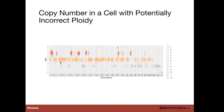We could end up with a solution where there are no odd-numbered copy number states to help us assess whether the cell is tetraploid. In that case, we could divide the entire set of copy numbers by two and get an equally reasonable genome at baseline diploid. This is the identifiability of copy number problem that doesn't go away with single cell.